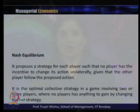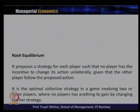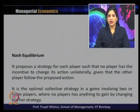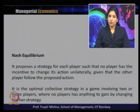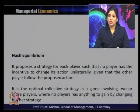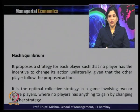Just a quick recap: Nash equilibrium is a strategy for each player such that no player has the incentive to change its action unilaterally, given that the other player follows the proposed action. This is the state of equilibrium, the state of balance, beyond which whatever effort the player puts in, it is not going to change their payoff. It is the optimal collective strategy in a game involving two or more players, where no player has anything to gain by changing their strategy.